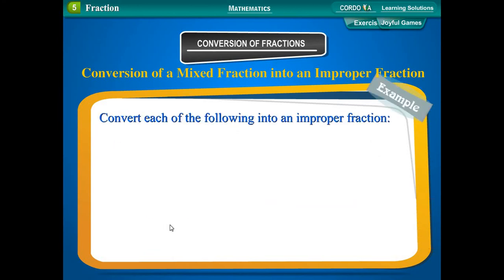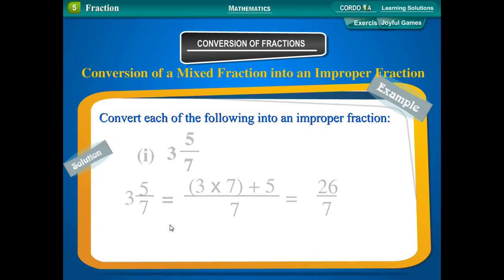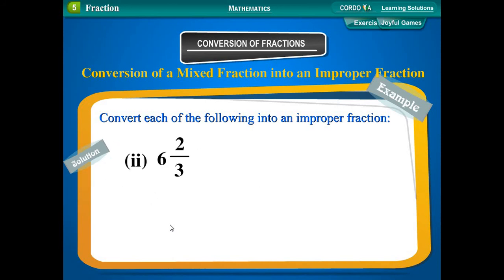Example: Convert each of the following into an improper fraction. 3 and 5 upon 7: Solution: 3 and 5 upon 7 = (3 × 7 + 5) upon 7 = 26 upon 7. 6 and 2 upon 3: 6 and 2 upon 3 = (6 × 3 + 2) upon 3 = 20 upon 3.